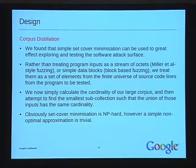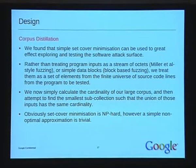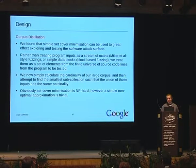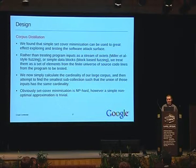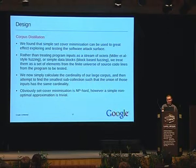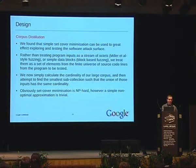Using a simple set cover minimization, I'm able to take a very large corpus — say 20 gigabytes worth of HTTP sample responses — find out which of these touch new code, and then find the minimal set of samples that do something interesting. Rather than treating a program's input as a stream of octets as Milo et al. did in early fuzzing work, or as simple data blocks, I treat inputs as sets of elements from the source code lines or basic execution blocks from the program to be tested. All I have to do is calculate the cardinality of this large corpus and find the smallest subcollection whose union still has the same cardinality. This is an NP-hard problem, but I don't need an optimal solution — a simple approximation is trivial to compute.